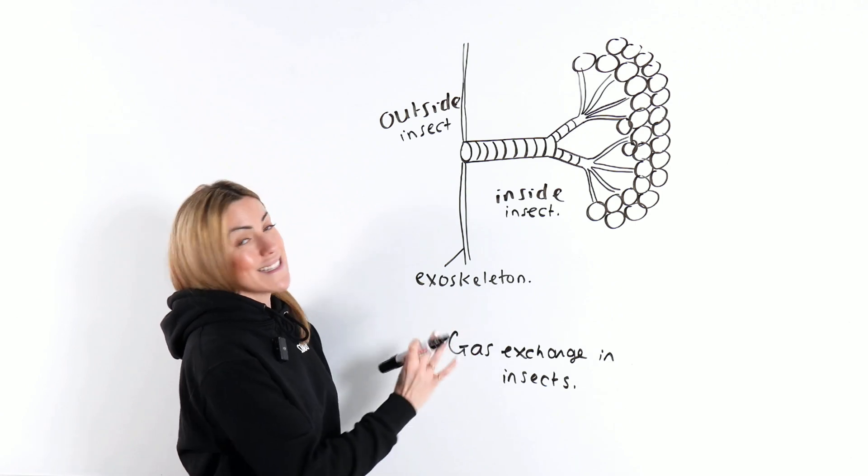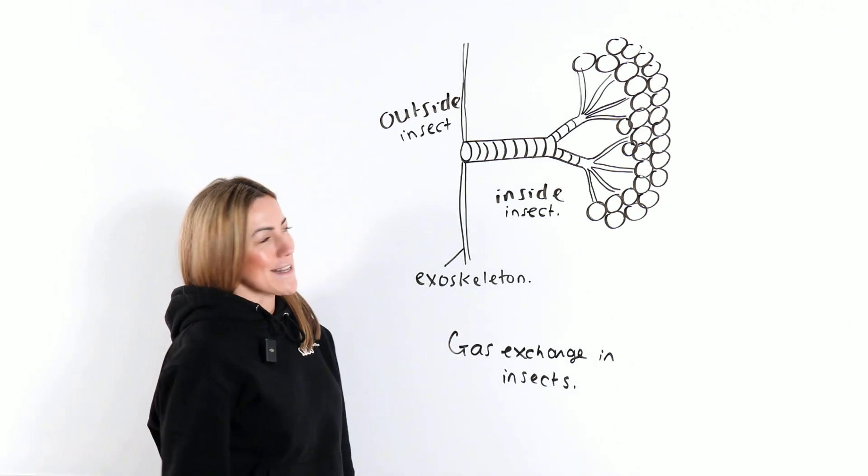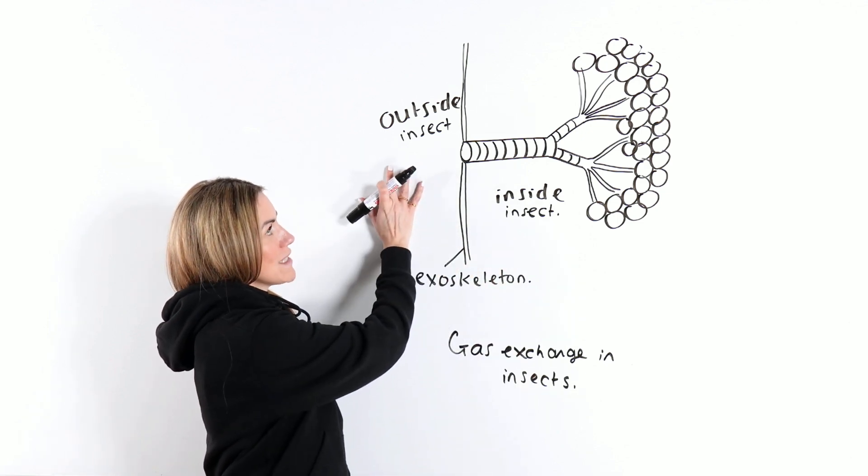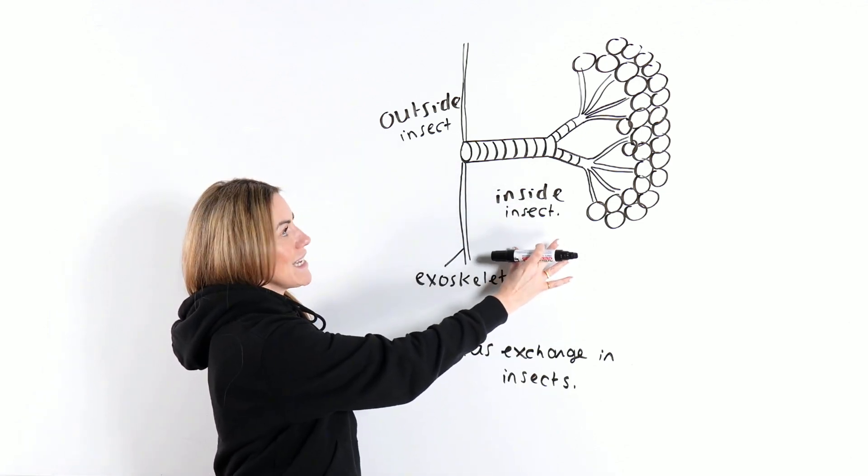Just to explain this diagram, because obviously I've drawn it myself, it's not perfect, but this is outside of the insect and this is inside the insect's body.